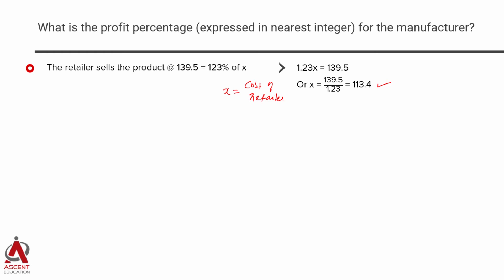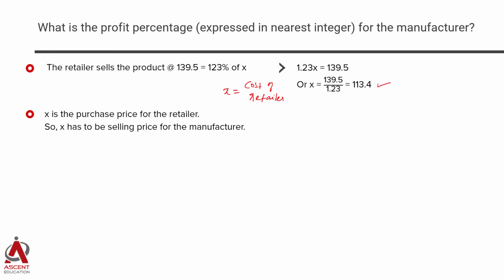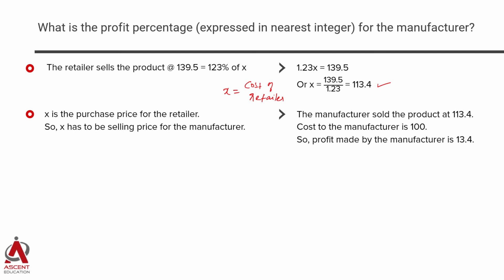At what price is the retailer buying? If x is the purchase price for the retailer, it has to be the selling price of the manufacturer. So the manufacturer sold it at 113.4. We took the cost of the manufacturer to be 100, so the manufacturer is making a profit of 13.4. The cost of the manufacturer is 100, his selling price is 113.4, therefore his profit is 13.4.